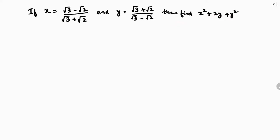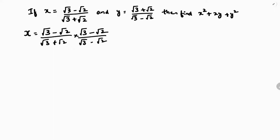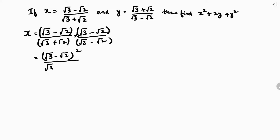First, rationalize the denominators of x and y. So x equals (√3 minus √2) by (√3 plus √2), multiplied by (√3 minus √2) by (√3 minus √2). The numerator becomes (√3 minus √2) whole square, and the denominator is of the form (a plus b)(a minus b), which equals a square minus b square.